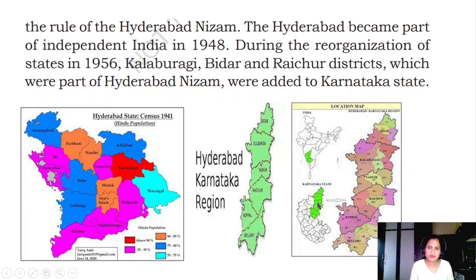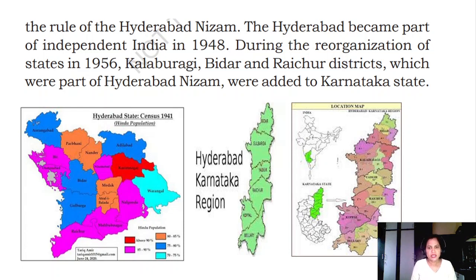The part of Hyderabad Nizams known as Hyderabad-Karnataka was included in Karnataka during the 1956 Karnataka integration - what we call Eki Karana of Karnataka. At that time, the Kannada-speaking districts - Bidar, Raichur, and Kalburgi - which were part of the Hyderabad Nizam's state, were added to Karnataka.